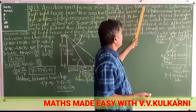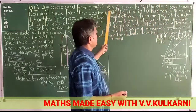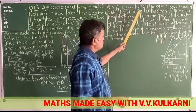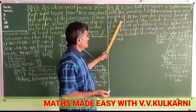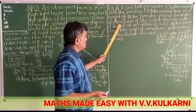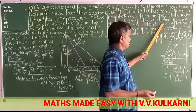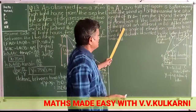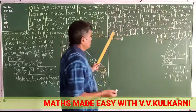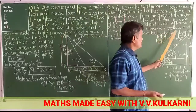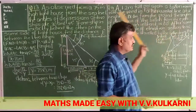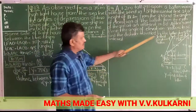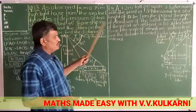Next problem: a 1.2 meter tall girl spots a balloon moving with the wind in a horizontal line at a height of 88.2 meters from the ground. The angle of elevation of the balloon from the eyes of the girl at an instant is 60 degrees. After some time, the angle of elevation reduces to 30 degrees. Find the distance traveled by the balloon during the interval.